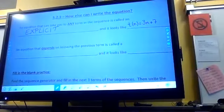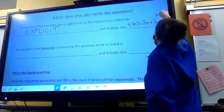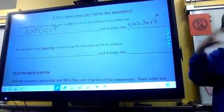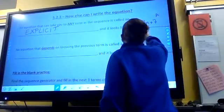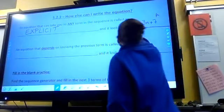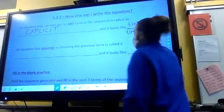So T of n would equal 3n plus 7. That means we start at 7, and I'm always adding 3. That's an explicit equation, because I can jump anywhere I want to. I can plug in 100, and I can tell you what's the 100th term. And I'm going to put a little A there. That stands for arithmetic. That's the arithmetic version.